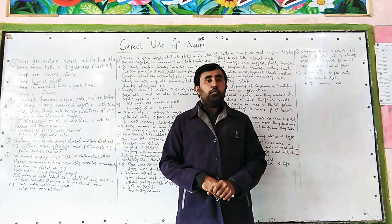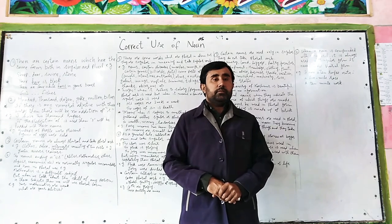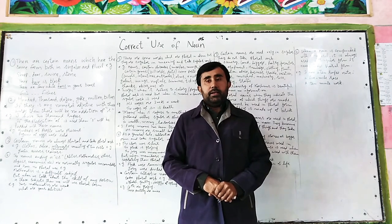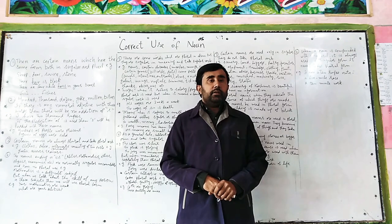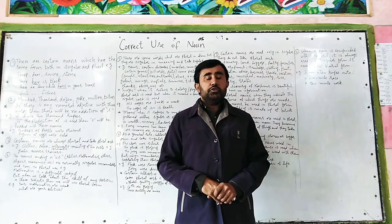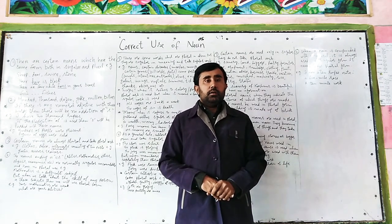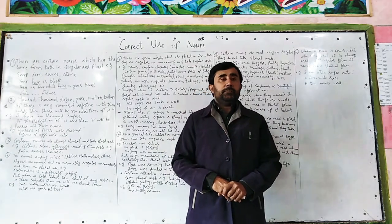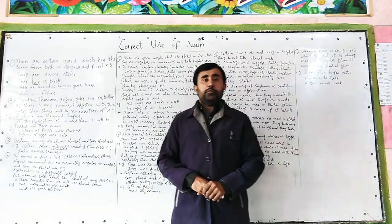For example: 'Four hairs in your beard are black,' 'Five hairs in your beard are gray.' In the same way, the noun 'fish' follows a similar pattern.